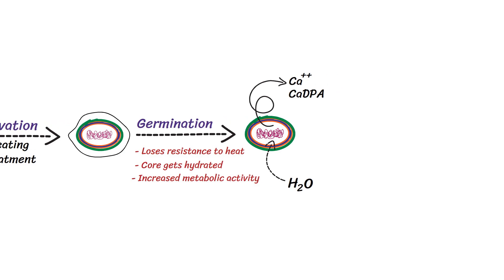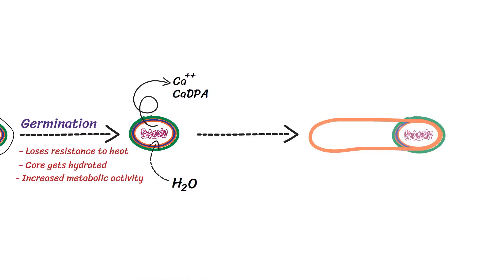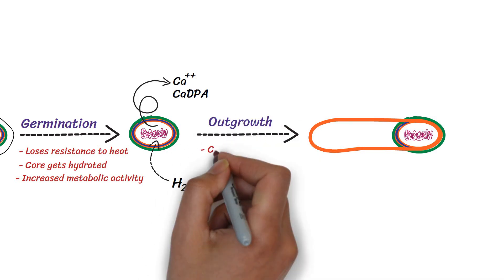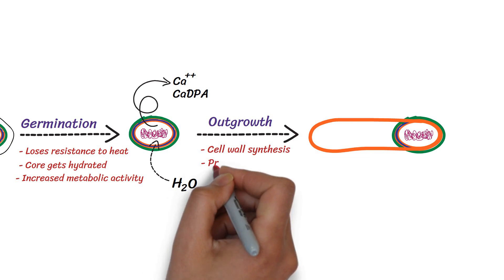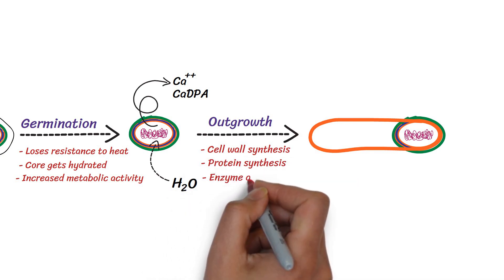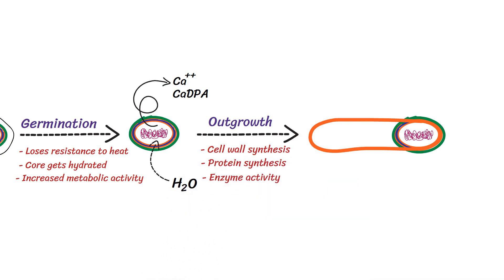After the germination, if nutrients continue to serve the spore, outgrowth will be initiated. In this stage, cell wall synthesis, protein synthesis, and enzyme activity can be seen. Finally, the spore develops into an active vegetative cell.